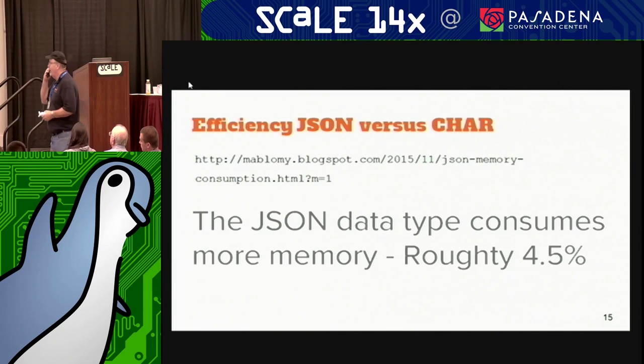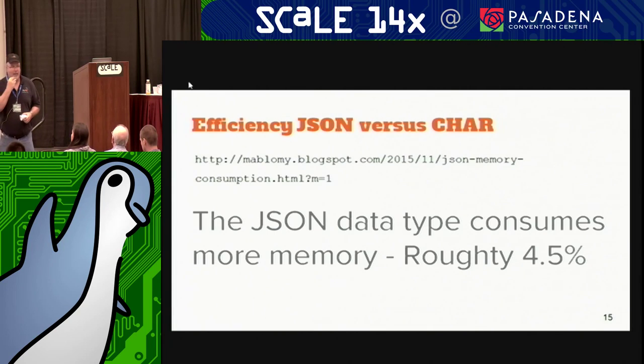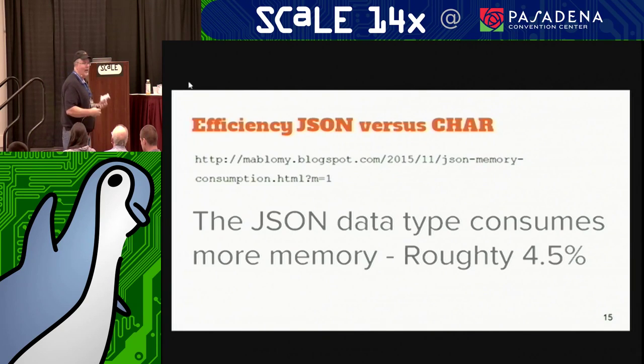Some of you are going to ask how efficient this is storage-wise. In memory, it's going to take about 4.5% more space to put in all the overhead for easy indexing of the JSON document.